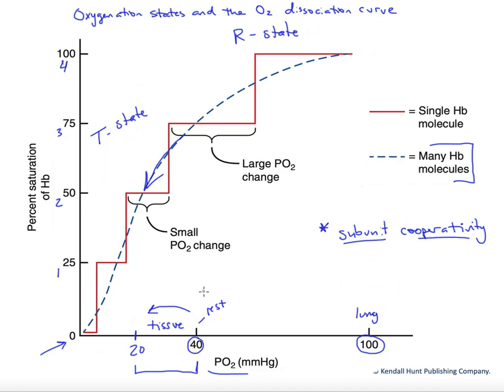So once again, it's important that we realize that we're not sliding up and down a curve, but that our O2 dissociation curve is simply helping us understand the state of saturation of hemoglobin under differing tissue or lung conditions.